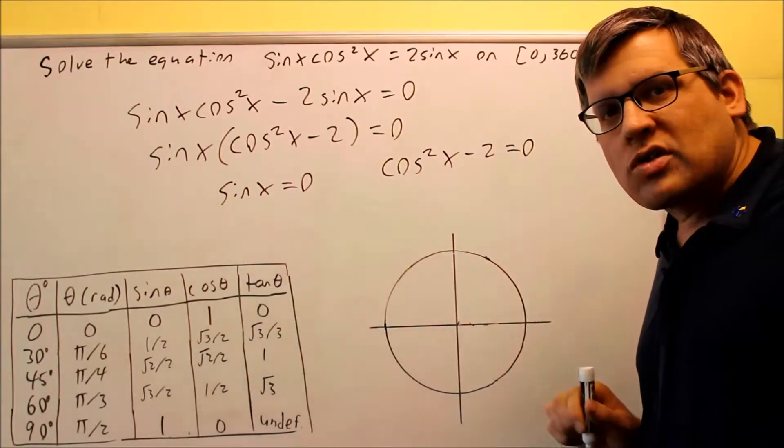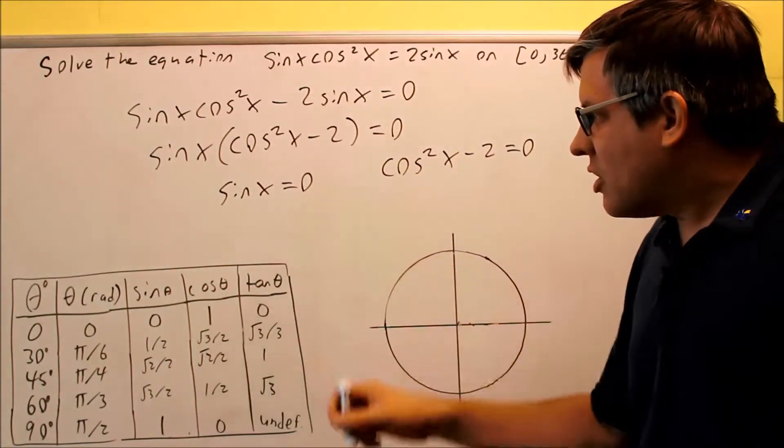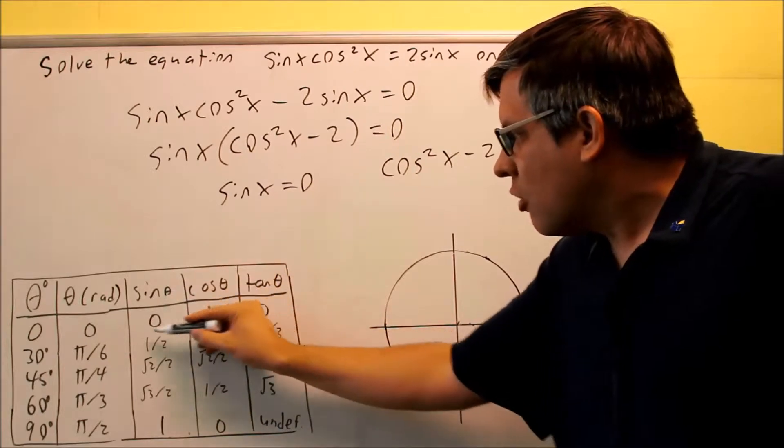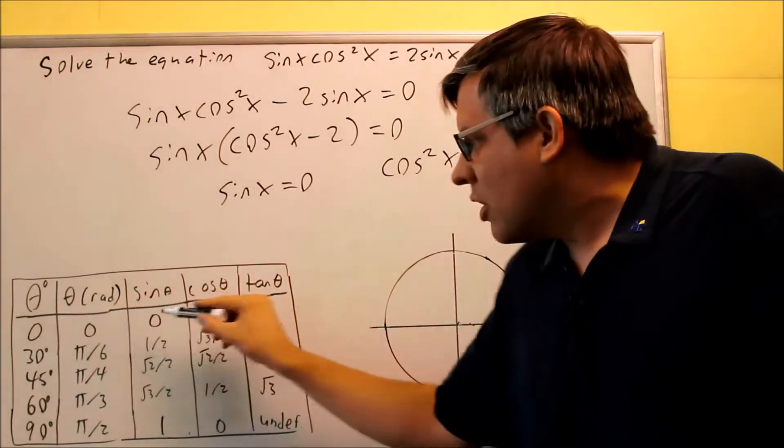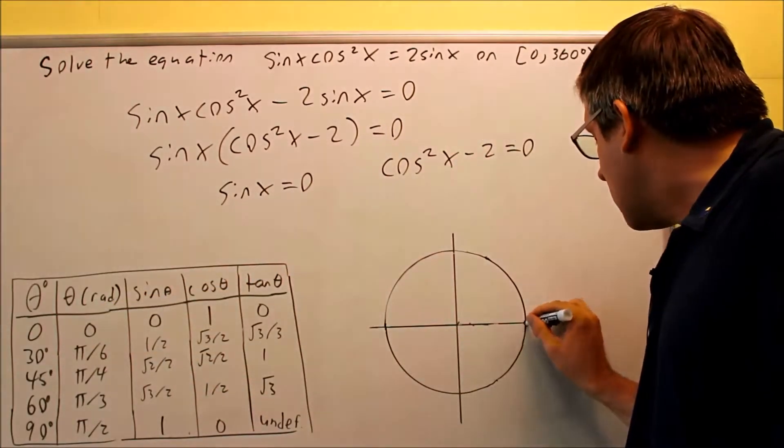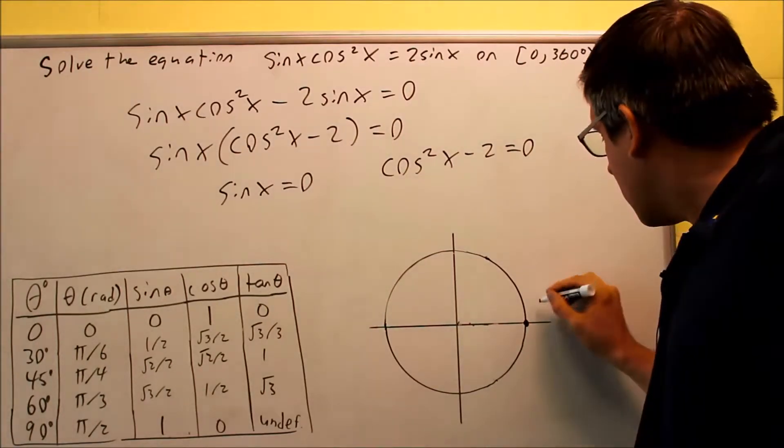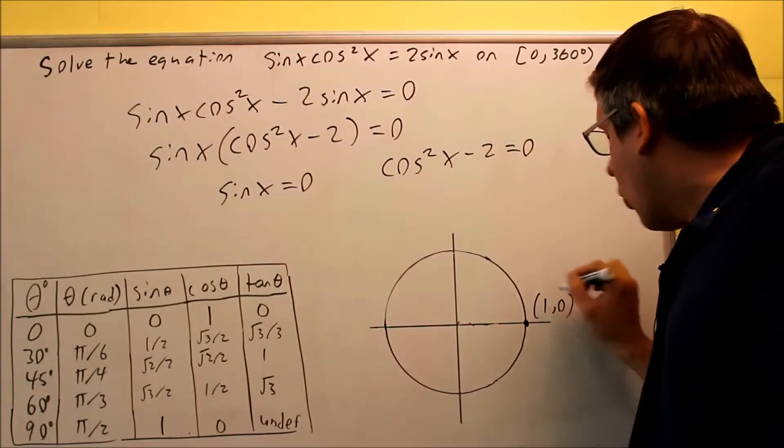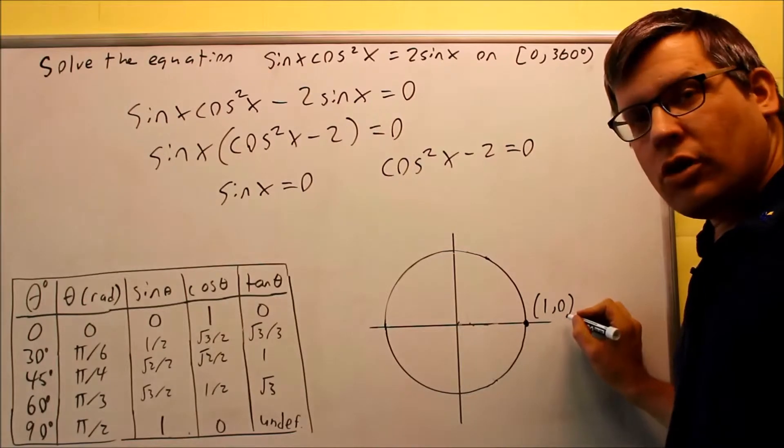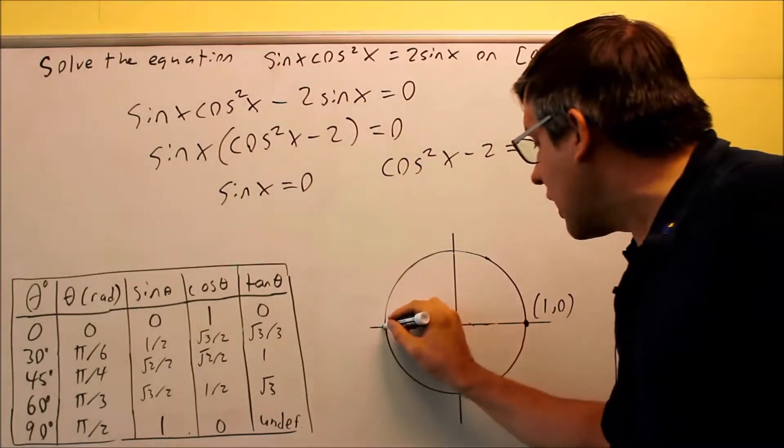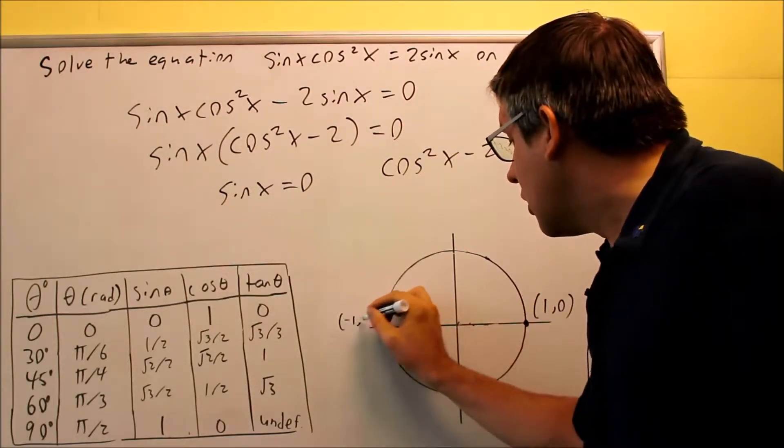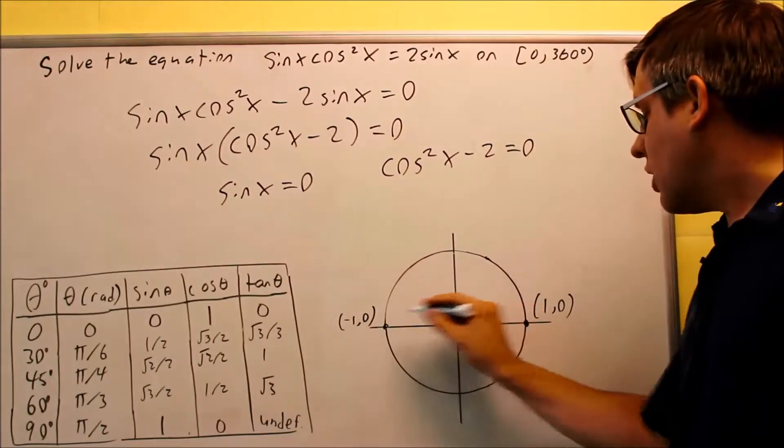This one, we can solve right away. Sine x equals zero, we look at our table here, and we notice that we get a zero there. That's going to be this spot on the unit circle right there. That coordinate would be one comma zero. That's where the y coordinate is equal to zero. We have another spot on the unit circle where it's equal to zero, and that's going to be over here. So we have these two.